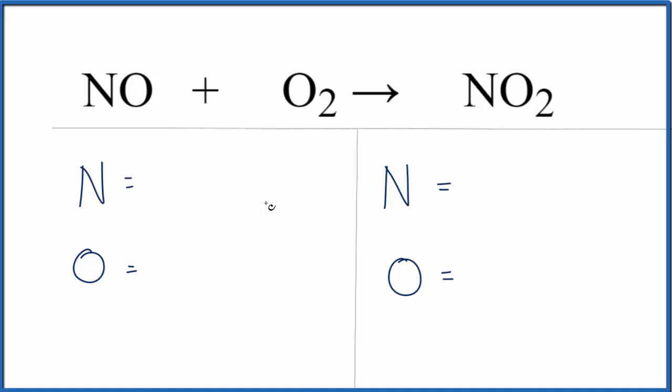We'll count the atoms up on each side of the equation. We have one nitrogen and then we have one oxygen. Don't forget we also have these two oxygens here. That gives us three oxygens on the reactant side.